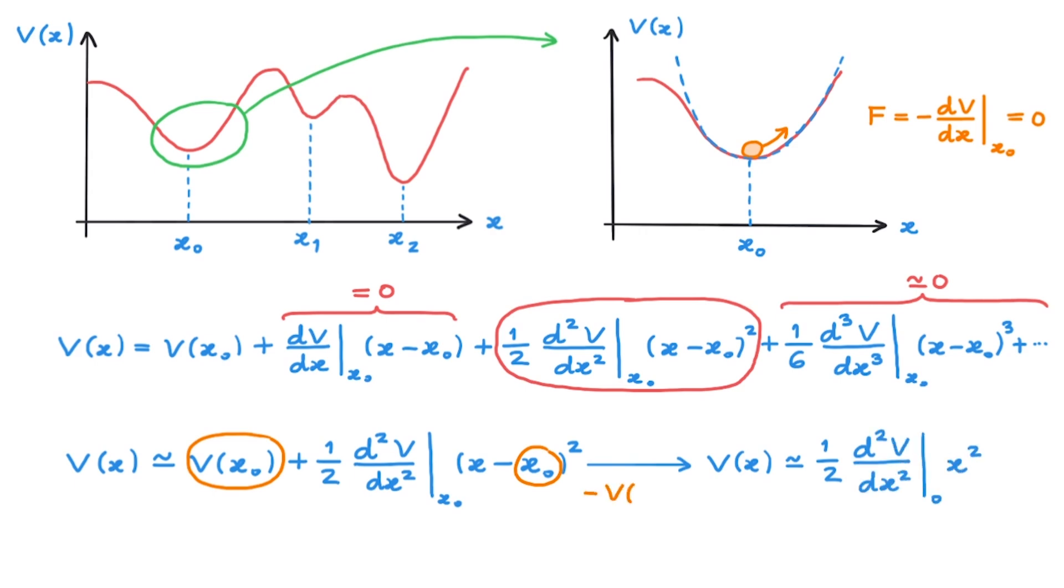By adding a constant minus V we get rid of the constant term and by shifting the origin of the x axis to x0 we also remove the offset. Right, so the final step is to identify this object here, which is a constant because it is a derivative evaluated at the origin with the constant k we had earlier.